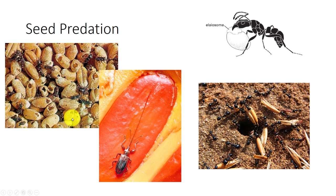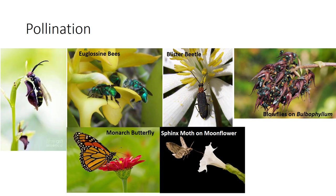The elaiosome is removed and fed to larvae. An array of beetles develop entirely within individual seeds or consume several seeds within one fruit. Rice weevils are stored product pests of corn, wheat, rice, and other plants. The hose-nosed weevil uses her exceedingly long snout to drill a hole deep into a cycad cone.